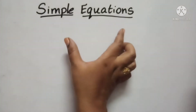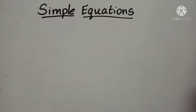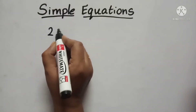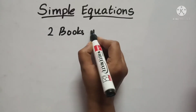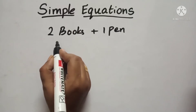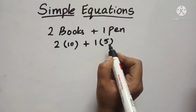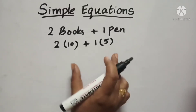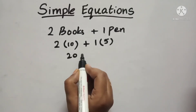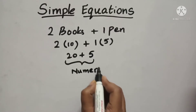Before going to learn what a Simple Equation is, we need a little introduction. Suppose you have gone to a stationary shop to purchase two books and one pen. The shopkeeper says each book costs 10 rupees, so 2 into 10, and each pen costs 5 rupees, so 1 into 5. That gives us 2 into 10 plus 1 into 5, which is 20 plus 5. This is called a Numerical Expression.